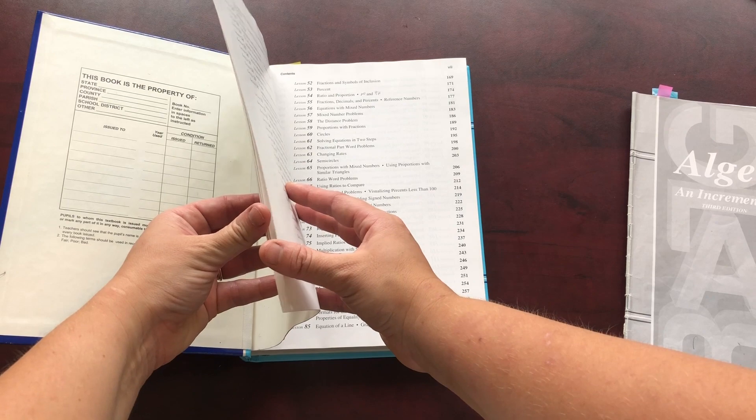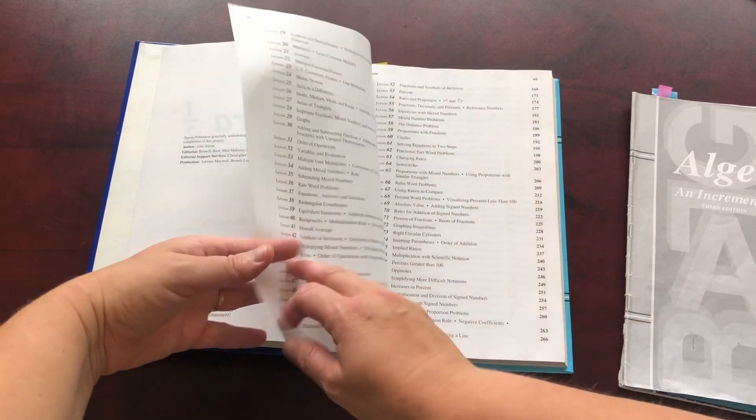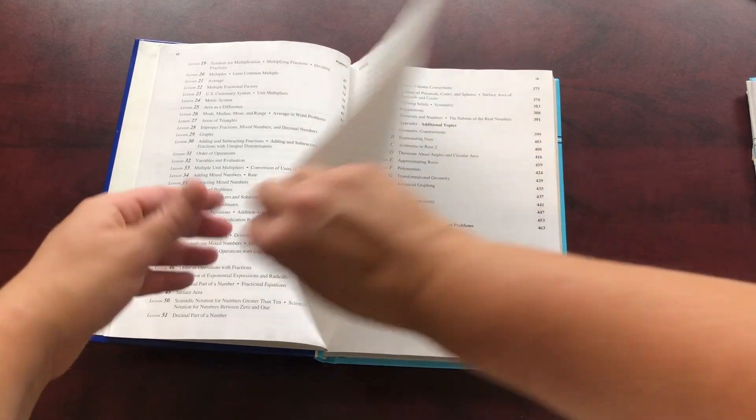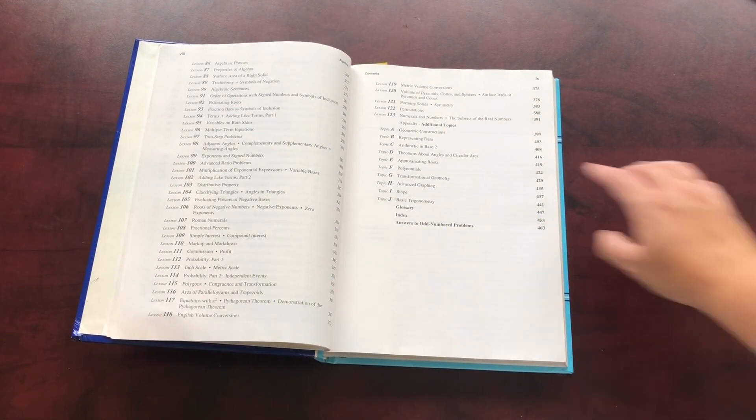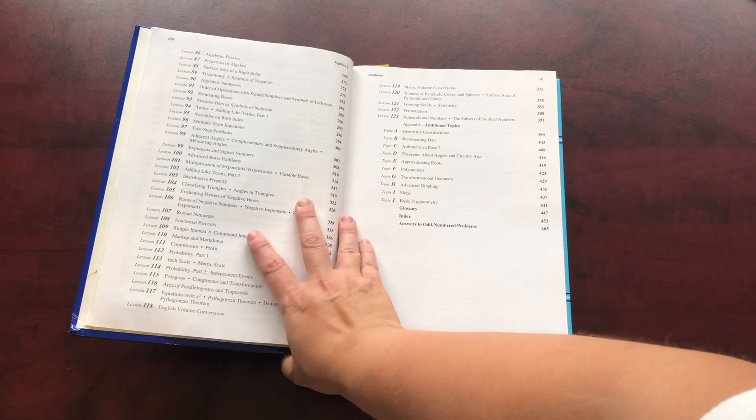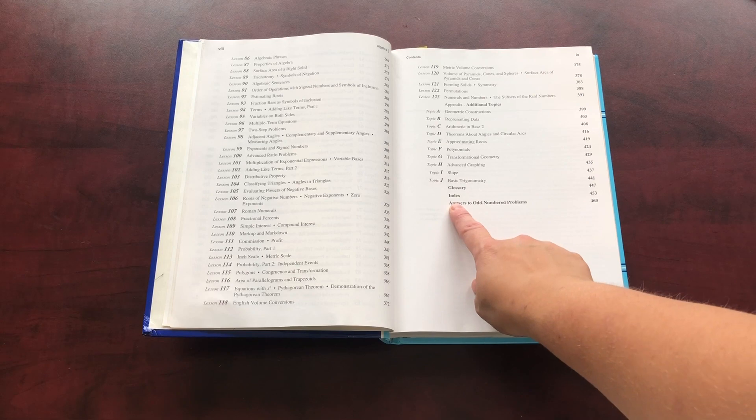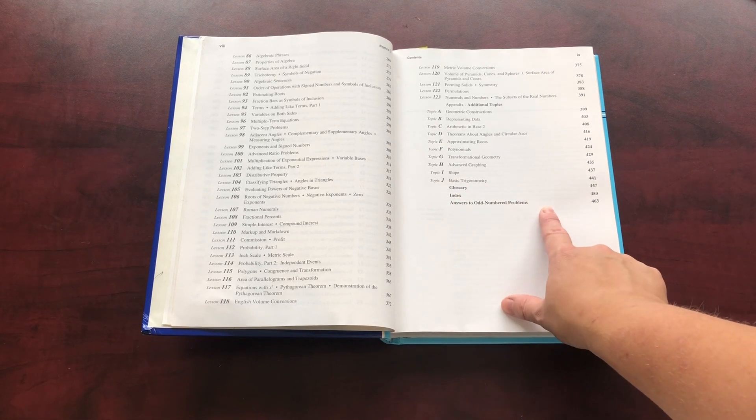So it starts off here by giving you the table of contents. There are 123 lessons in here. That's a little different than the younger levels. There's extra topics. Then there's a glossary index and answers to odd numbered problems.